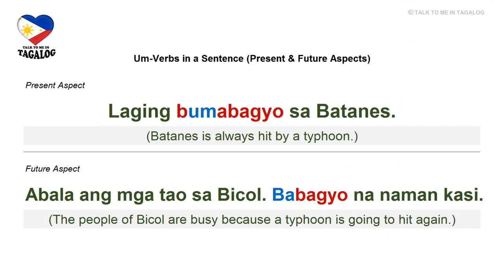Present aspect: Laging bumabagyo sa Batanes — 'Batanes is always hit by a typhoon.' Laging means always, and Batanes is a beautiful province in the northernmost part of the Philippines. Future aspect: Abala ang mga tao sa Bicol, babagyo na naman kasi — 'The people of Bicol are busy because the typhoon is going to hit again.' Bicol is a beautiful province in southern Luzon, home to the Mayon Volcano. Babagyo means will be hit by a typhoon, na naman is again, and kasi means because.